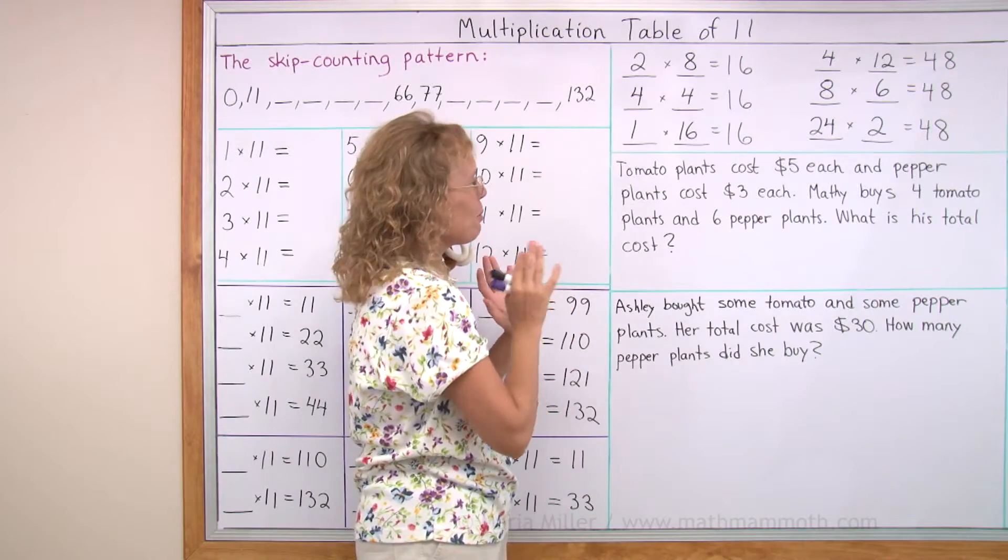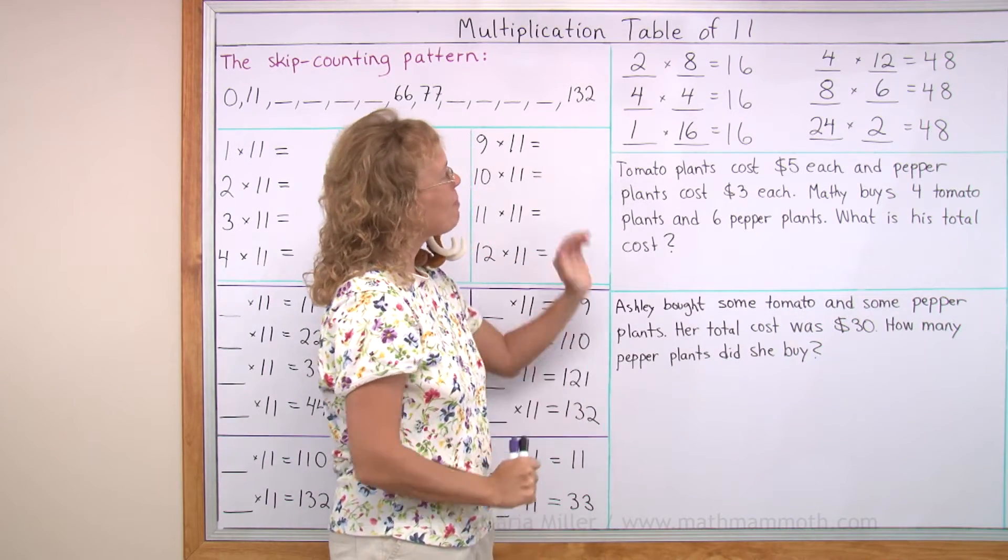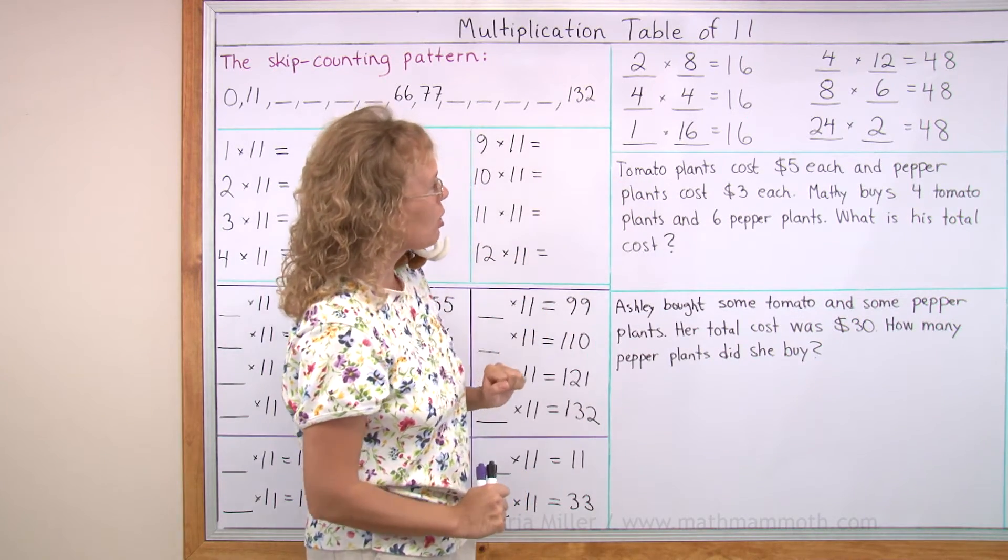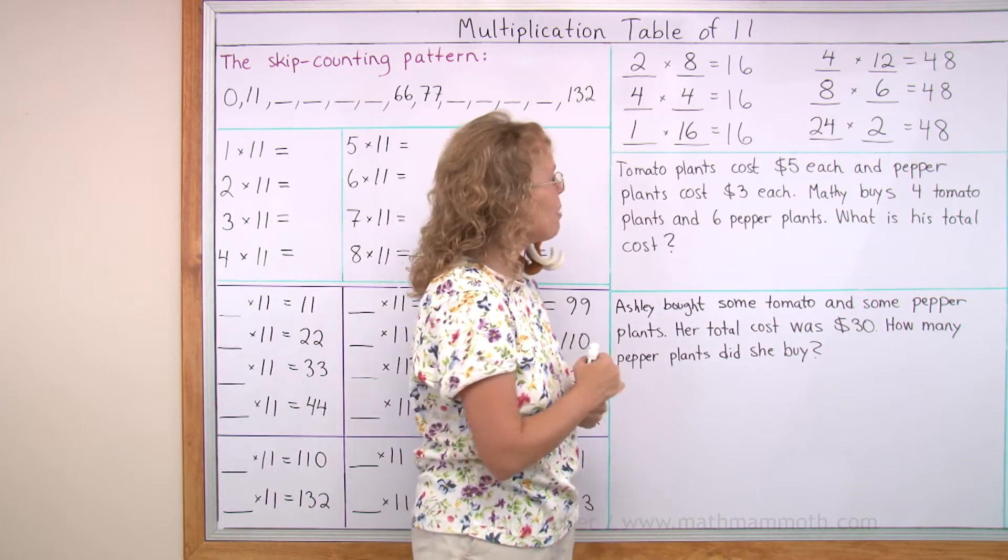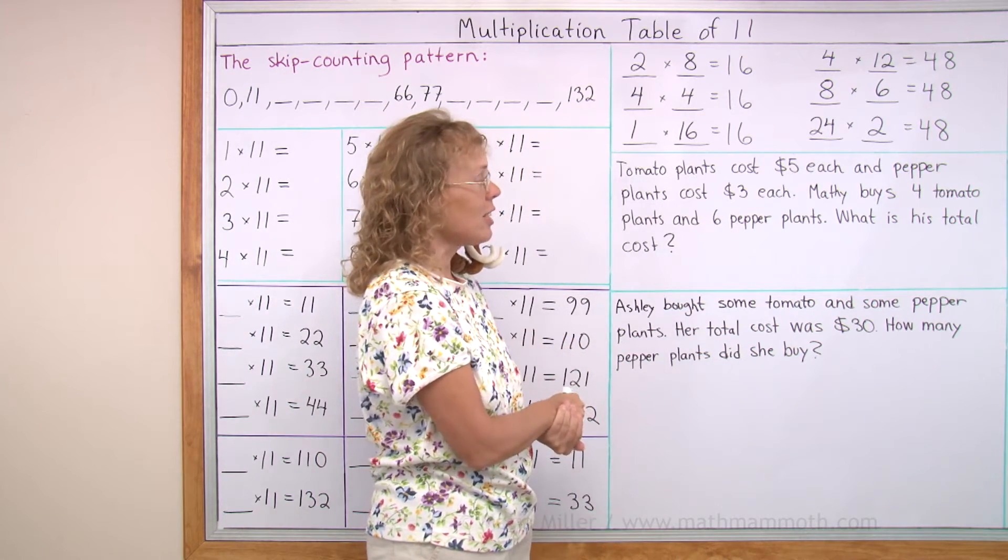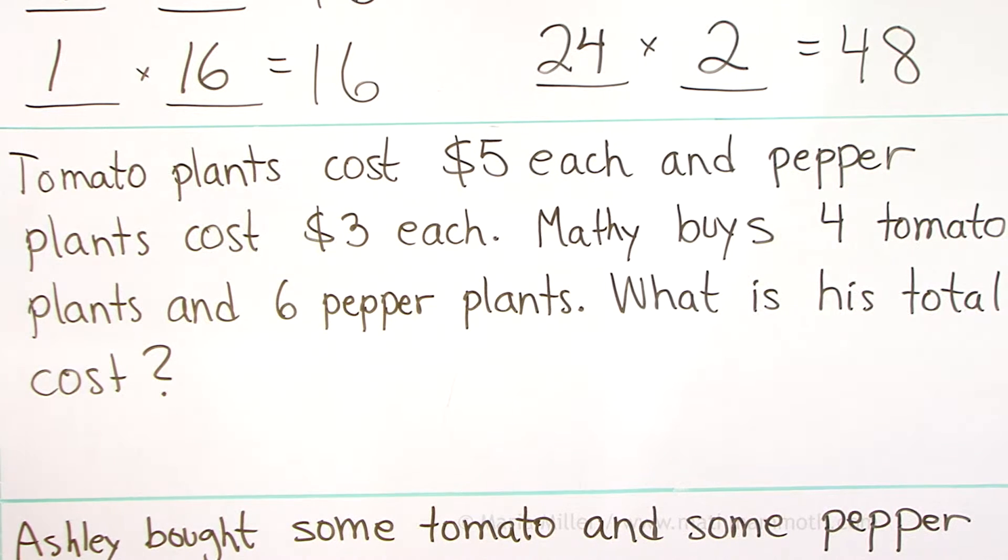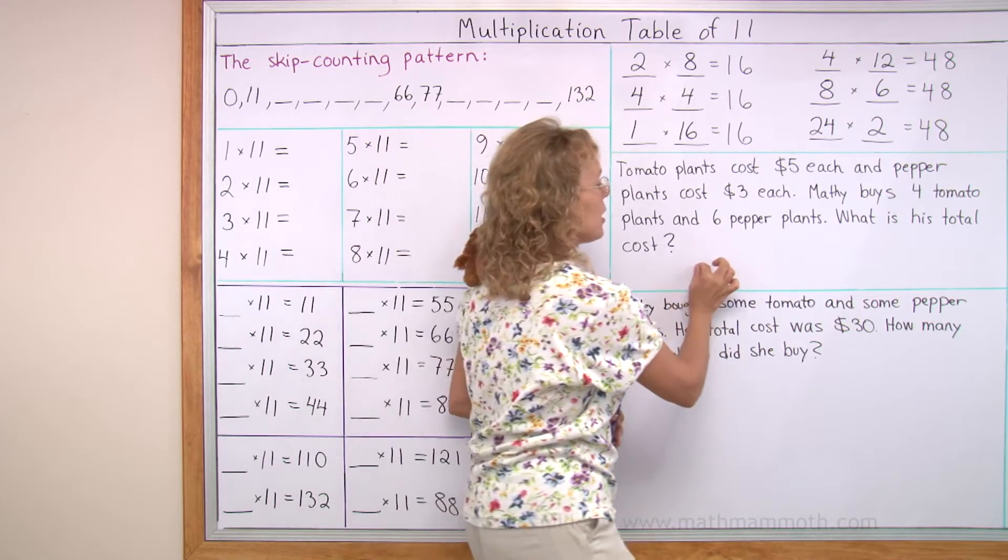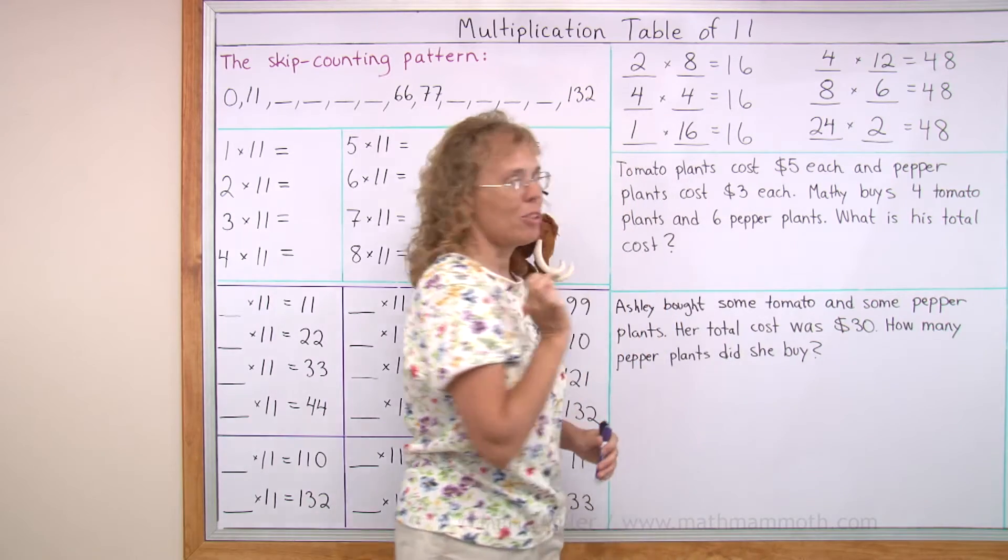Here's a word problem about Matthew. Tomato plants cost $5 each and pepper plants cost $3 each. Matthew buys 4 tomato plants and 6 pepper plants. What is his total cost? Can you tell me? Can you also tell me a number sentence for me to write about the total cost?